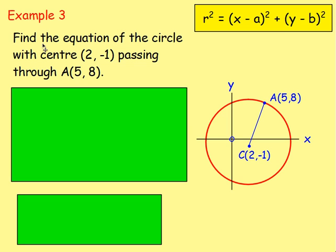Example 3: find the equation of the circle with centre 2, negative 1, passing through 5, 8. You may wish to sketch this — you've got the centre 2, negative 1, and point A at 5, 8 lying on the circumference. You need the centre and the radius. The centre you have: 2, negative 1. So you can set up x minus a, all squared, plus y minus b — you just need the radius.